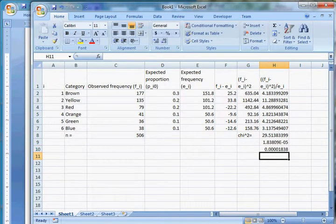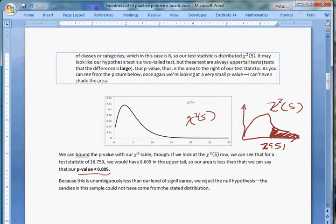So that's pretty small. That's like a 1 in a million chance, roughly. There's a 1 in a million chance that you would get 500 candies that look like this, that were this far away from that distribution, if the null were true.